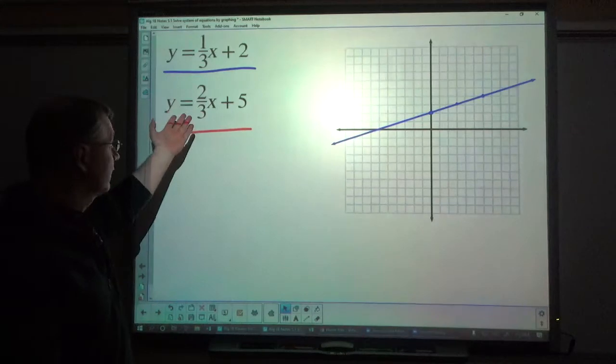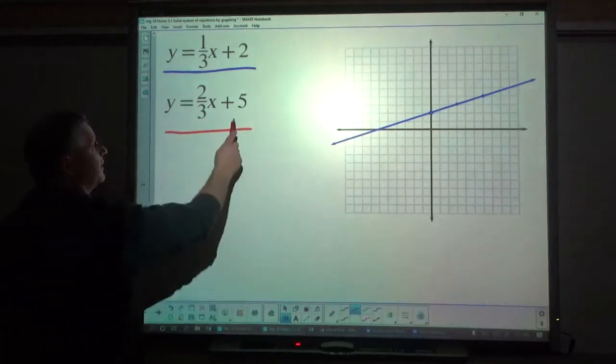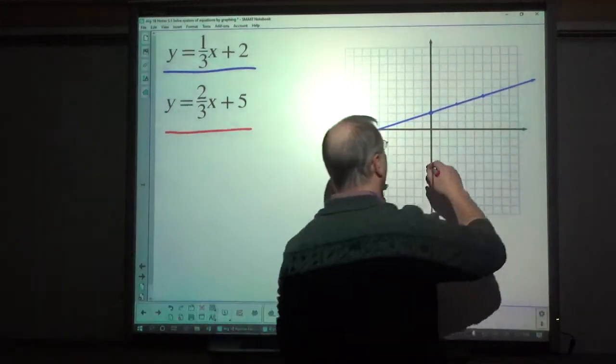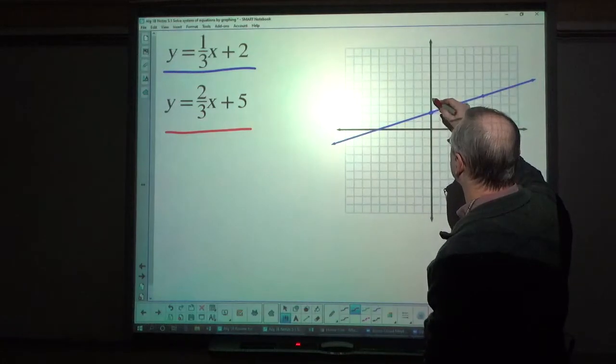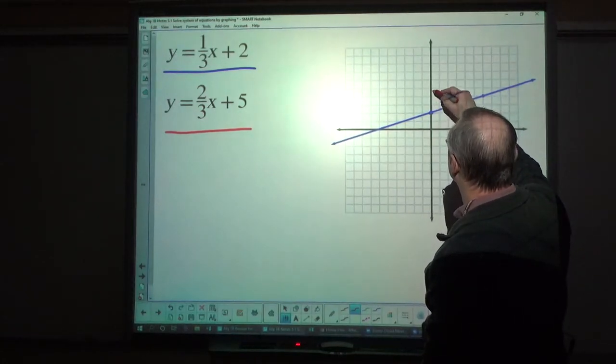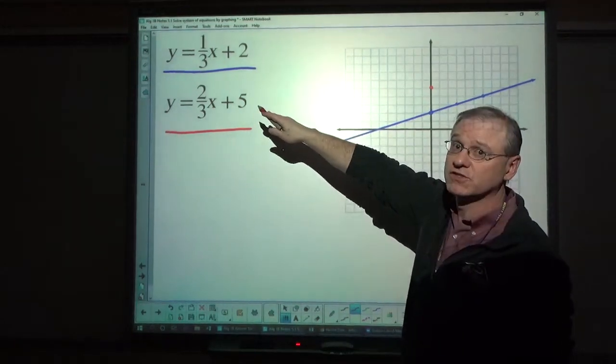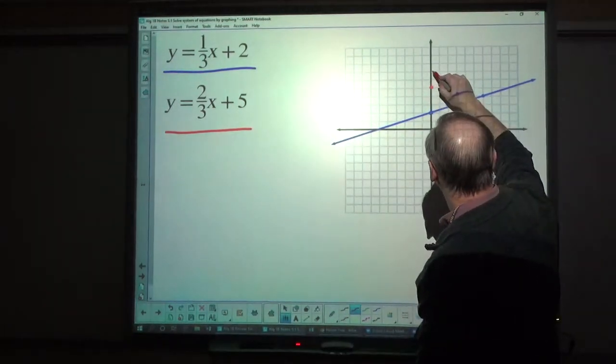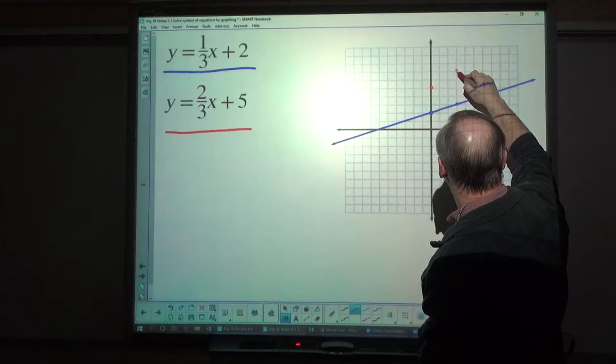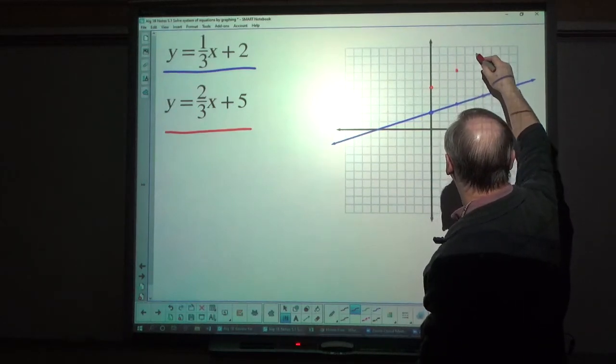Alright, so now we're going to do the red line. Positive 5 is the y-intercept: 1, 2, 3, 4, 5. And then I go up 2 to the right 3. Up 2, 1, 2, 3. Up 2, 1, 2, 3.